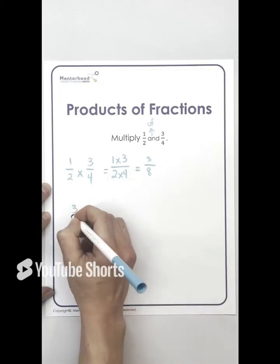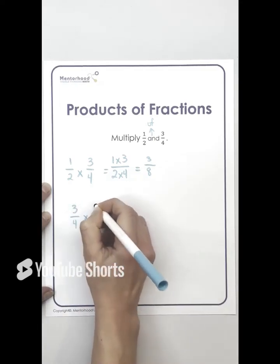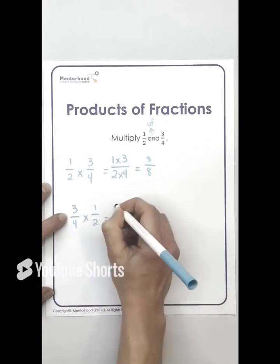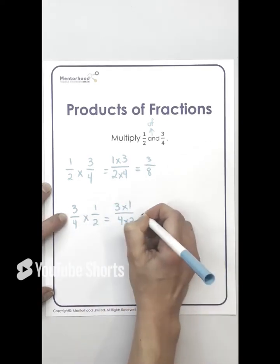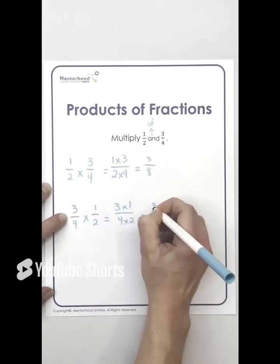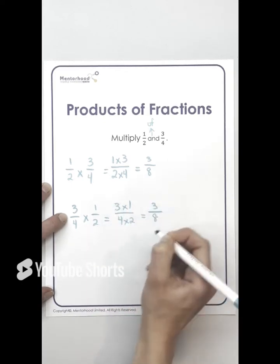Well, let's write it out. This would be three times one on the top and four times two on the bottom. Three times one is three. Four times two is eight.